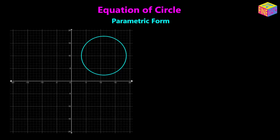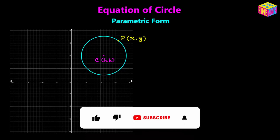Hi everyone. In this video we are going to see how to derive the parametric form of equation of circle. Let's suppose we have a circle like this with the center at point C having coordinates, and then let's pick a point on the circle, let's say point P whose coordinates are.